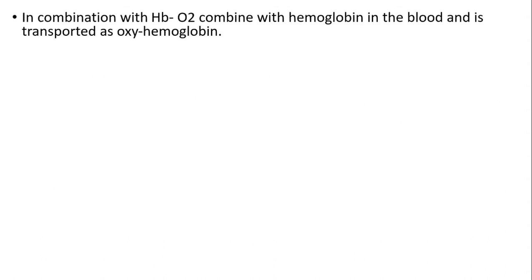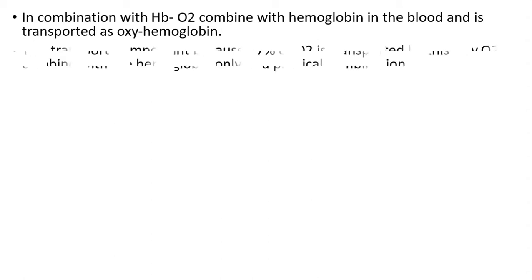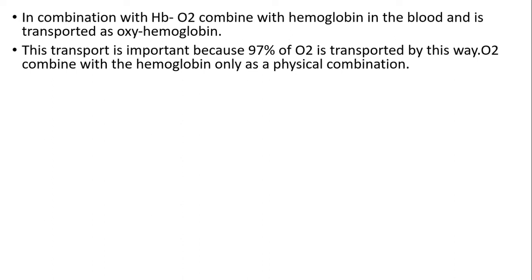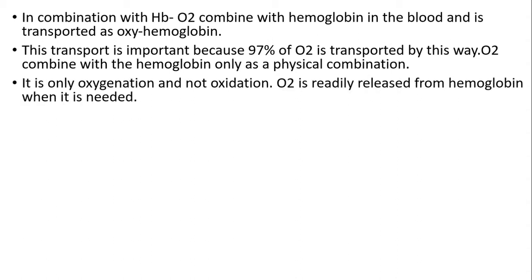The second method is in combination with hemoglobin. Oxygen combines with hemoglobin in the blood and is transported as oxyhemoglobin. This transport is important because 97% of oxygen is transported by this method. It is only oxygenation and not oxidation, meaning oxygen is readily released from hemoglobin when it is needed.